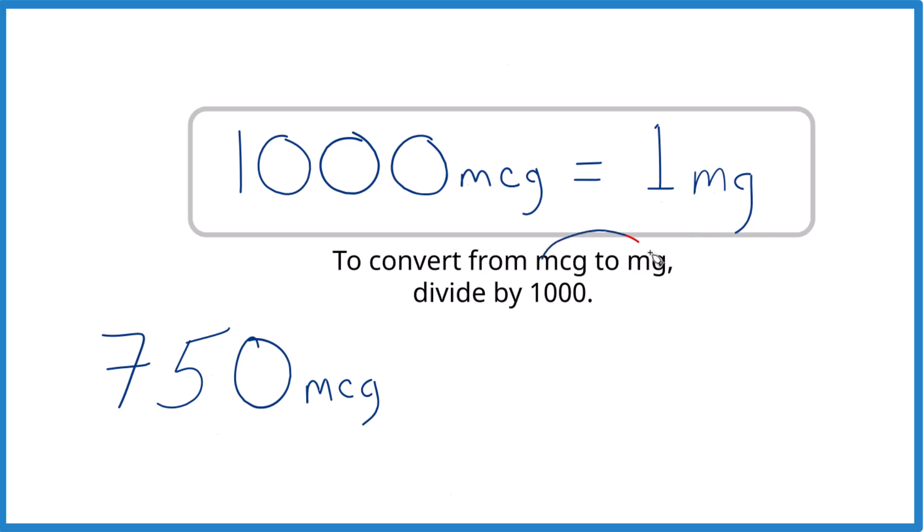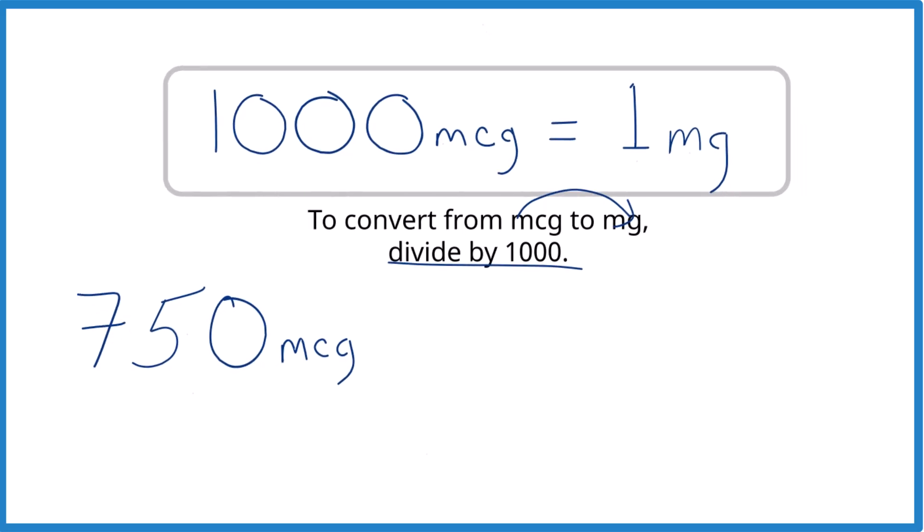If you're going from mcg to mg, you just divide by 1,000. So we take our 750 micrograms and divide by 1,000. Remember, that's 1,000 micrograms per milligram, so we can put some units there.